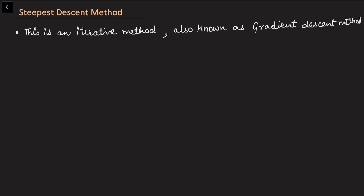In this video I'll be explaining the steepest descent method. This is an iterative method also known as the gradient descent method because we are going to use partial derivatives. I highly recommend watching my last video, linked in the description, to get an introduction to search technique methods and unimodal functions.